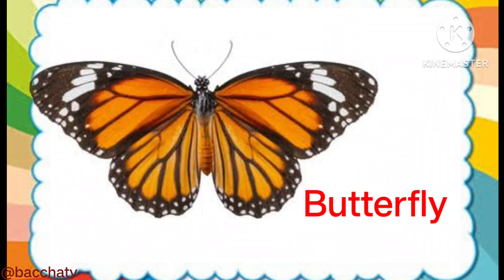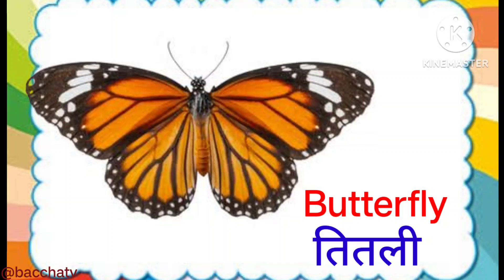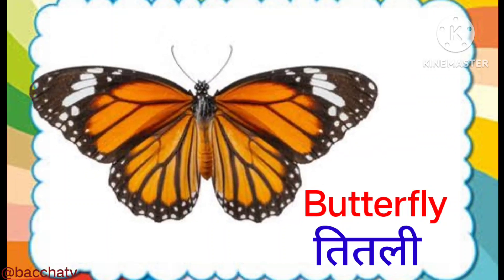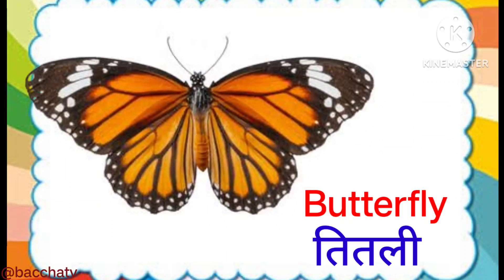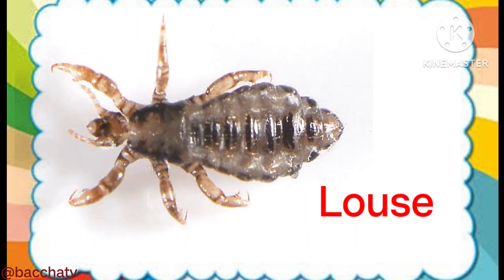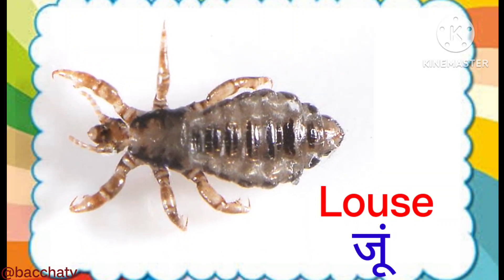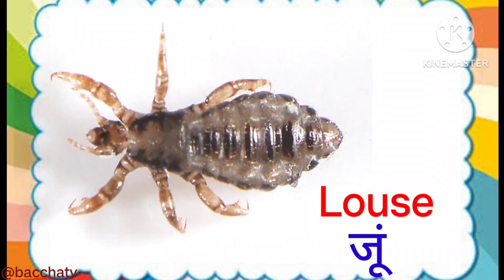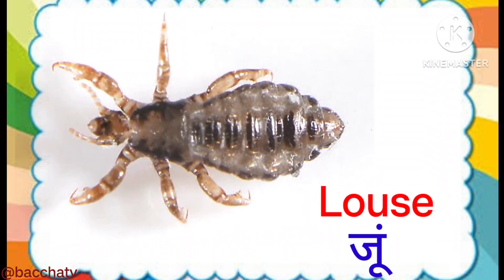Butterfly — this is a butterfly. Butterfly means titli. Louse — this is a louse. Louse means joon.